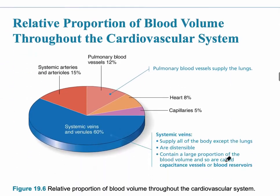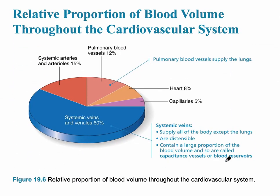This pie chart demonstrates the relative proportion of blood volume found in the various blood vessels. Systemic veins hold about 60–65% of the blood at any one time, which is why we refer to them as capacitance vessels. This makes sense because in the venous system there is the lowest pressure.